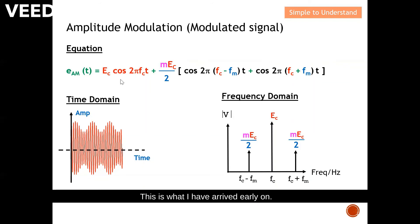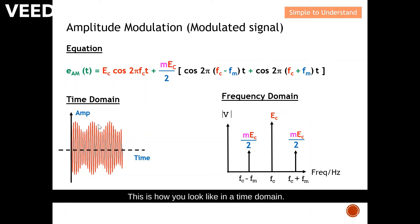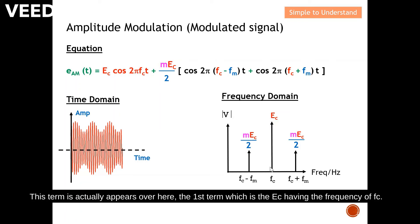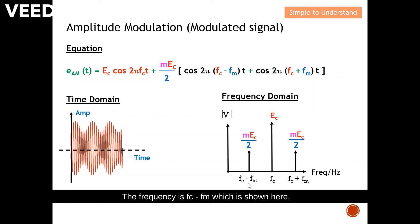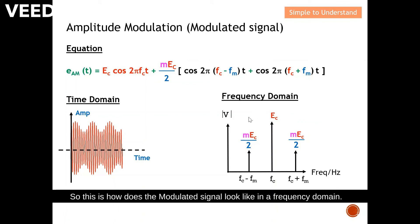Now for the modulated signal — this is the equation we arrived at earlier. In the time domain this is how it looks. In the frequency domain there are three terms: the first term is ec at frequency fc; the second term has amplitude m·ec/2 at frequency fc minus fm; and the third term also has amplitude m·ec/2 at frequency fc plus fm. This is how the modulated signal looks in the frequency domain.